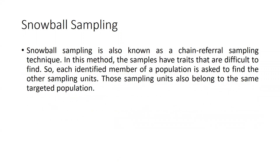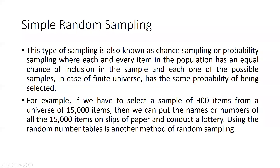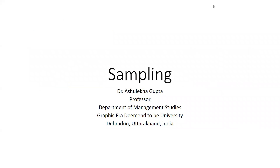Snowball sampling is also called a chain reference sampling technique. The researcher selects the first person, who then gives a reference to another person, creating a chain. Through this chain of references, the researcher contacts more and more people to collect the sample. This concludes the topic of sampling and sampling methods.